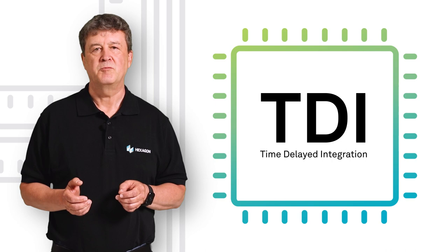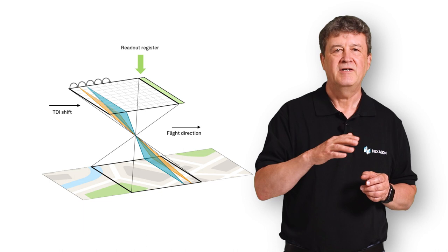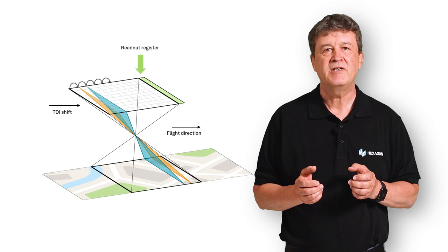Here you can see the TDI feature for a CCD sensor. TDI shift is in the flight direction. The charge each CCD element is collecting will be shifted to the neighboring element. This process will be repeated for the pre-calculated number of FMC shifts before the information will be registered.